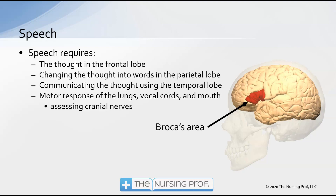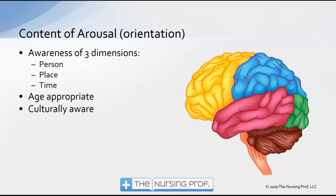Assessing speech also gives us a bit of the cranial nerve response from that motor output of the lungs, vocal cords, and mouth. The next level down is content of arousability — this is the orientation part. We typically ask about three dimensions: person, place, and time. For example, we may ask the patient what their name is.